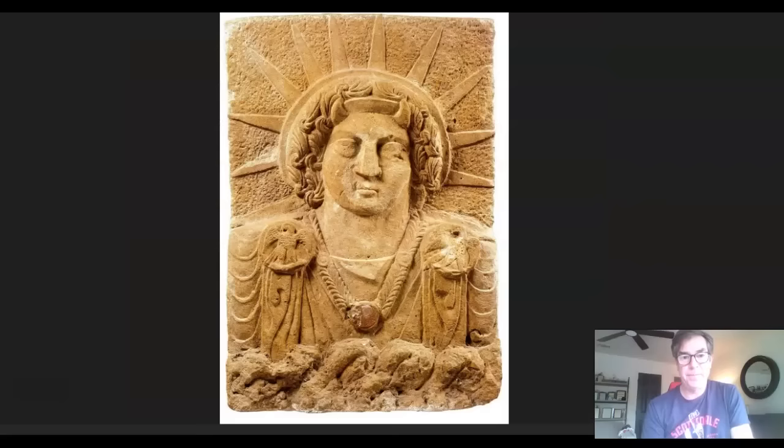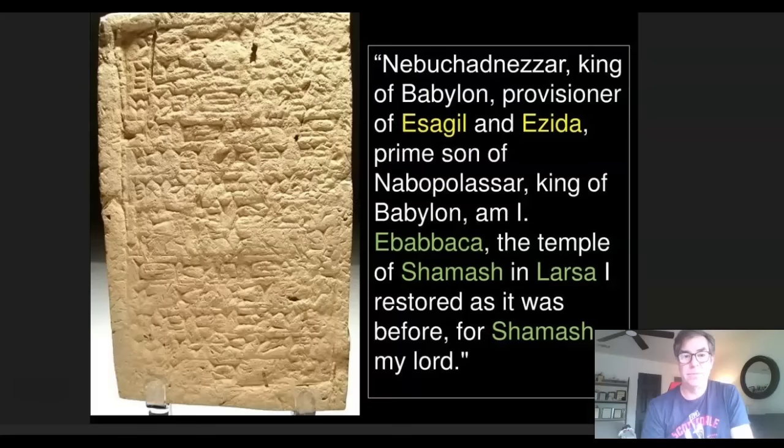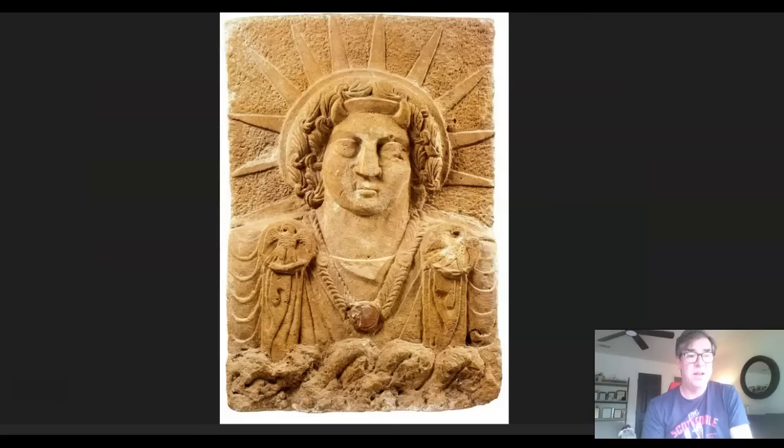Getting back to Babylon and Nebuchadnezzar's image of gold that we see in Daniel 3, this is Shamash, the Babylonian god who Nebuchadnezzar worshipped. He built temples to this god. And what does this god look like? It looks exactly like the Statue of Liberty. Here's another image of Shamash — again, it looks exactly like the Statue of Liberty. This is a clay tablet or cylinder found in Iraq, and the interpretation reads: 'Nebuchadnezzar, king of Babylon, I, the temple of Shamash, restored as it was before for Shamash, my lord.' So Nebuchadnezzar restored a temple of worship for the god Shamash.